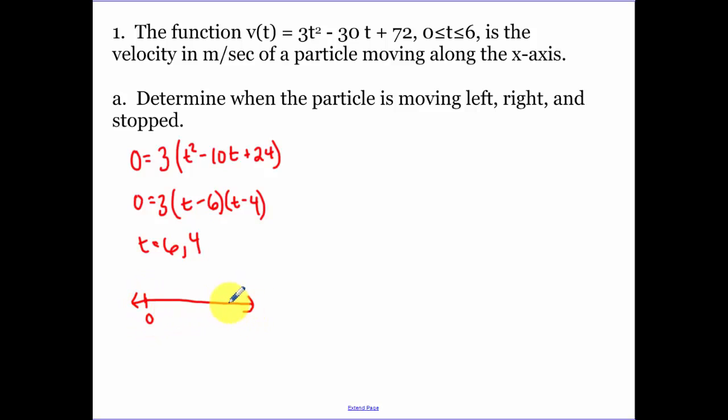So t equals six and t equals four. So when am I moving left, right, or stopped? We make our little number line. We're going from zero to six. Another place we're stopped is at four. Remember I plug in a number between zero and four. And when I plug in a number between zero and four, we are positive. So I am moving to the right when velocity is positive. So that's from zero to four. We're going to plug in a number between four and six. Our value is negative. So we are moving left from four to six. And actually I shouldn't have put that little equal to sign in there because when are we stopped? We're stopped when our velocity equals zero. So that's at four and six seconds. And make sure you guys are putting in some units.